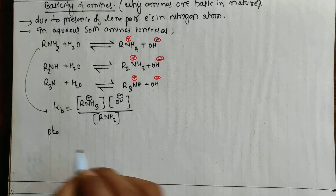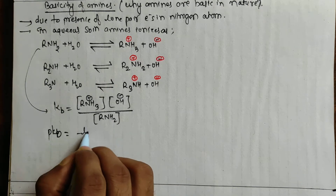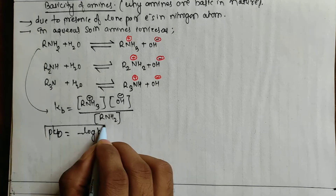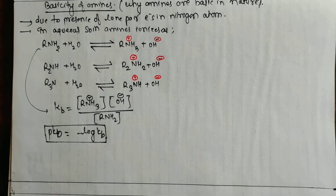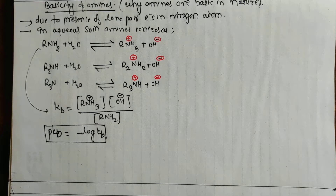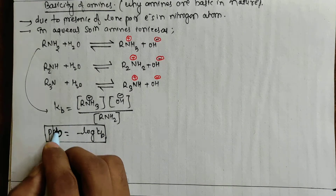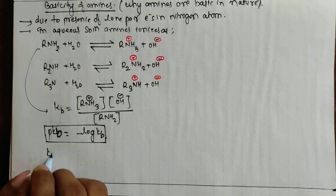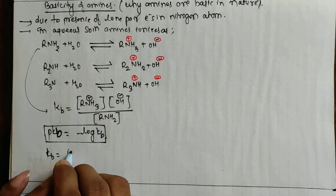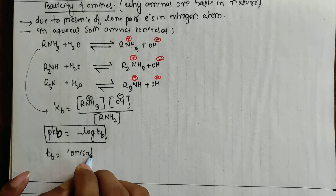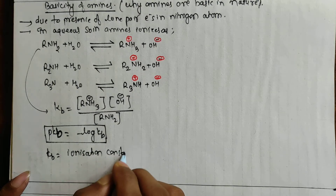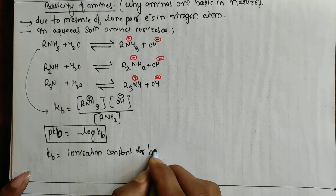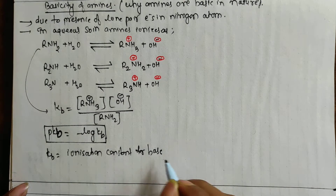Acidity and basicity: KB is the ionization constant or equilibrium constant for a base. What is the negative log of KB? The negative log of KB gives pKB. Basicity is related to pOH and the negative log of OH minus.